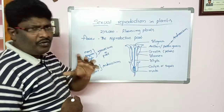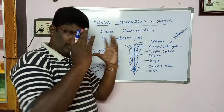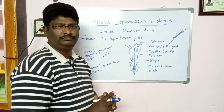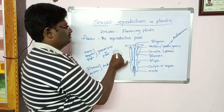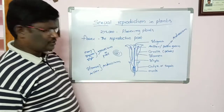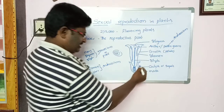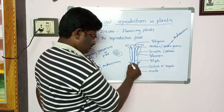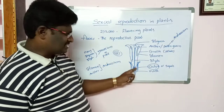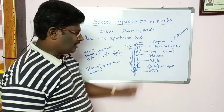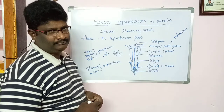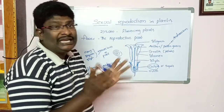Before entering sexual reproduction in plants, we will see the structure of a flower. There are four whorls in a flower. The first whorl, which is green in color, is called the calyx or sepal. The calyx or sepal will give protection to the inner parts of the flower because it is the outer layer.